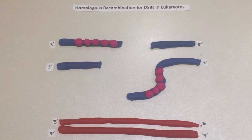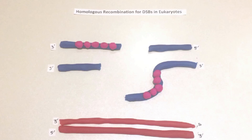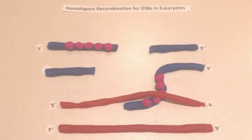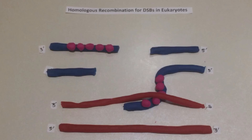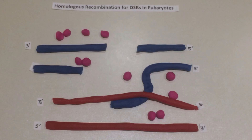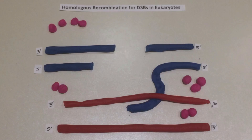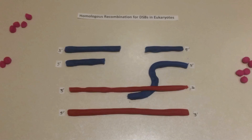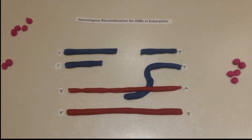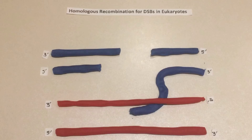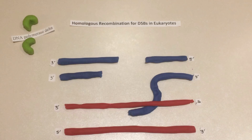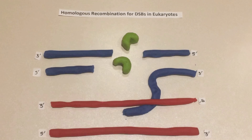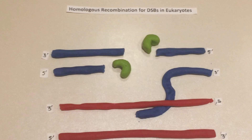After finding such a sequence, the single-stranded nucleoprotein filament moves into or invades a similar or identical recipient DNA duplex in a process called strand invasion. DNA polymerase delta fills in the gaps and ligase seals the joints.